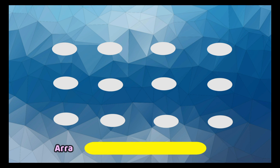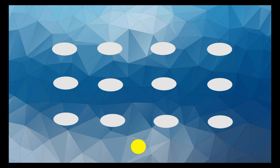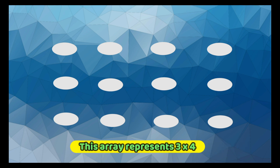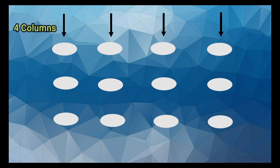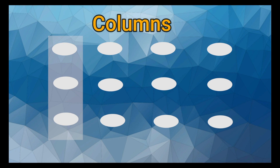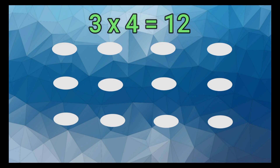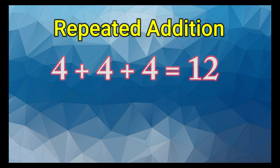A group of objects or pictures that are arranged to show math concepts is called an array. The array represents 3 groups of 4. The 3 represents the number of rows and the 4 represents the number of columns. Rows run horizontally from left to right and columns run vertically, meaning they go up and down. We can solve this by counting the pictures the array shows us and we get the answer 12. We can also use the repeated addition strategy: 4 plus 4 plus 4 equals 12.